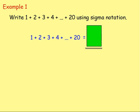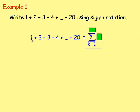Example one: write 1 + 2 + 3 + 4 + ... + 20 using sigma notation. You can see we have a series and we want another way of writing it. We use sigma. The starting value is 1, so we have k equals 1 at the bottom. What we're doing with each number is nothing — we're just keeping it as k. We start with k as one, then two, then three, all the way up to k as twenty. So the number at the top is twenty. That is it written using sigma notation.